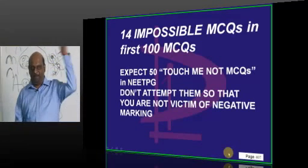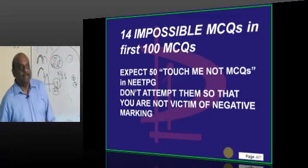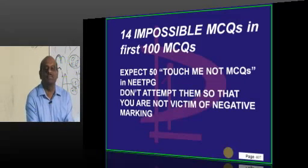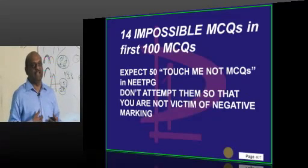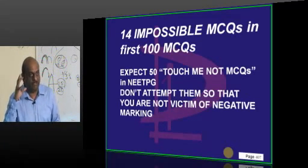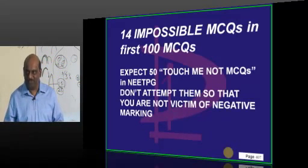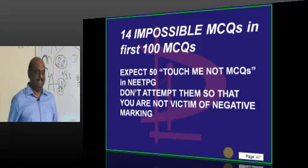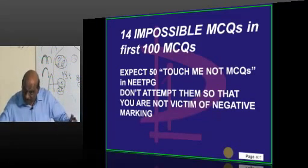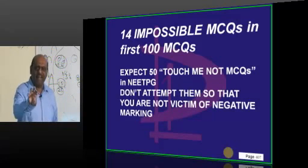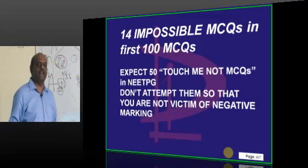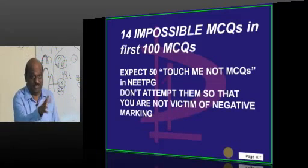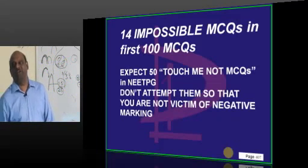In the first 100 questions, about 14 impossible questions appeared — meaning roughly 50 impossible questions in 300 total. Do not touch those 50 questions so that negative marking does not hurt your score. For the 220 crackable questions, aim for 100% accuracy. With 10-15 more correct answers, you can reach 235-240. Discretion is most important to win — don't attempt the impossible questions.